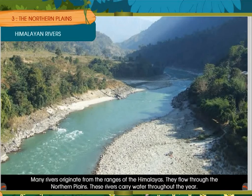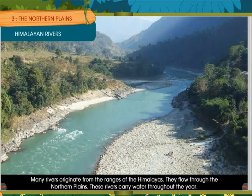Now we will learn about Himalayan rivers. Many rivers originate from the Himalayan mountains and flow through the northern plains. These rivers carry water throughout the year because the snow on the Himalayan mountains melts in summer, and in the rainy season rainwater also flows in them.